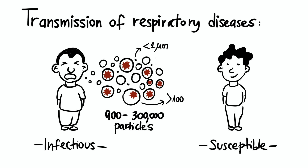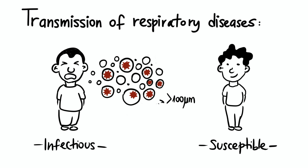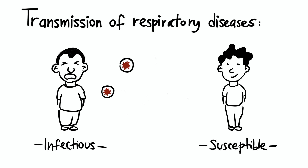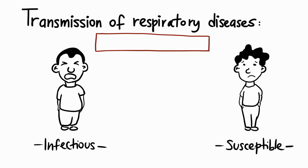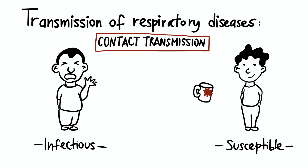These particles are less than one micron up to hundreds of microns in size. By comparison, the thickness of a human hair is about 100 microns. One way to get infected is by contact transmission — when you touch a surface that has been contaminated by a virus and then touch your eyes or nose, you can get infected.